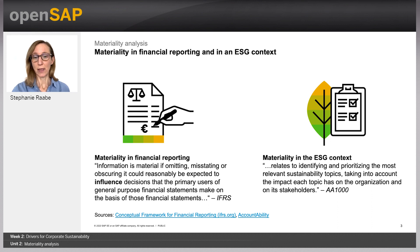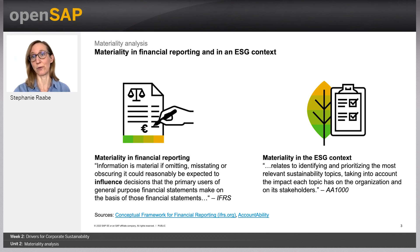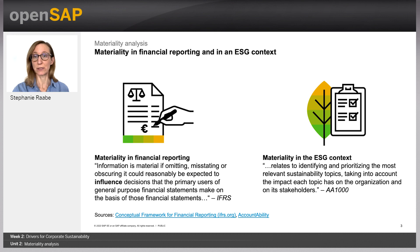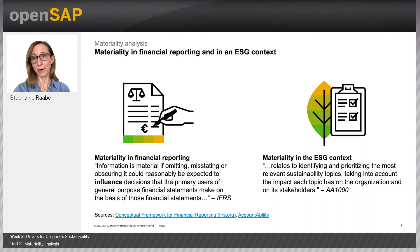Traditionally, the term materiality has been defined in the context of financial reporting: information is material if omitting, misstating, or obscuring it could influence decisions that the readers of financial statements make on the basis of that information. When sustainability reporting evolved, it was clear that something similar was needed. AccountAbility was one of the first organizations that provided a definition of sustainability materiality. It is clear that to make good decisions, an organization and its stakeholders need to know what issues are material to the sustainability performance of the company, requiring an ongoing materiality determination process integrated across the organization.